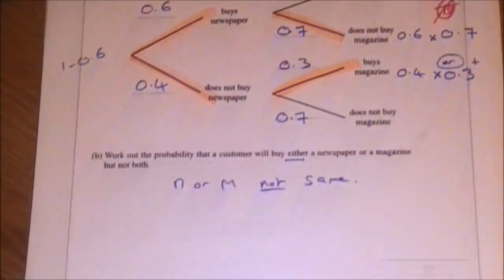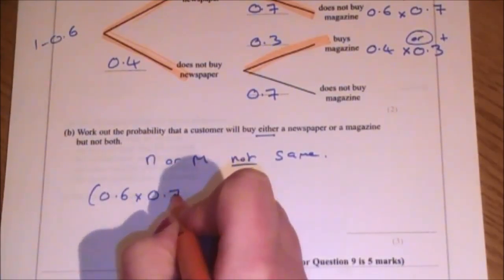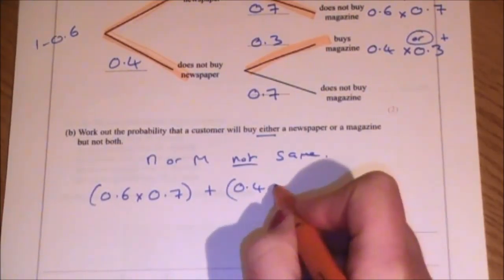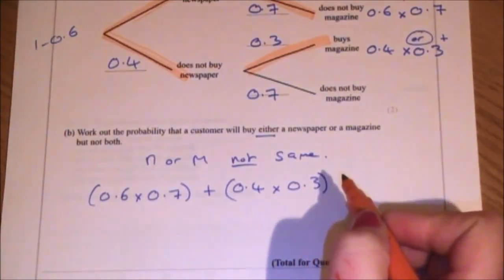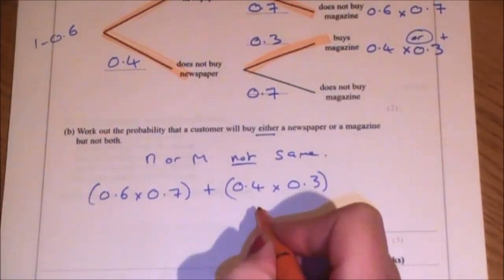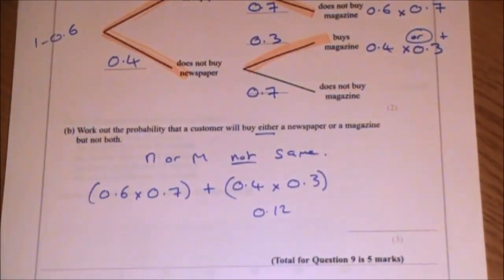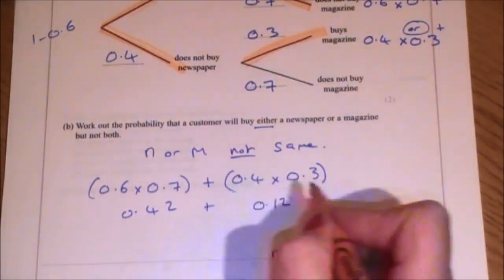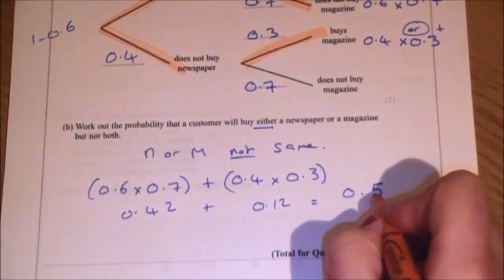So let's now go down here and deal with the actual working out. My two options are 0.6 times 0.7 or 0.4 times 0.3. And this is a calculator paper. So 0.4 times 0.3 is 0.12. And 0.6 times 0.7 is 0.42.